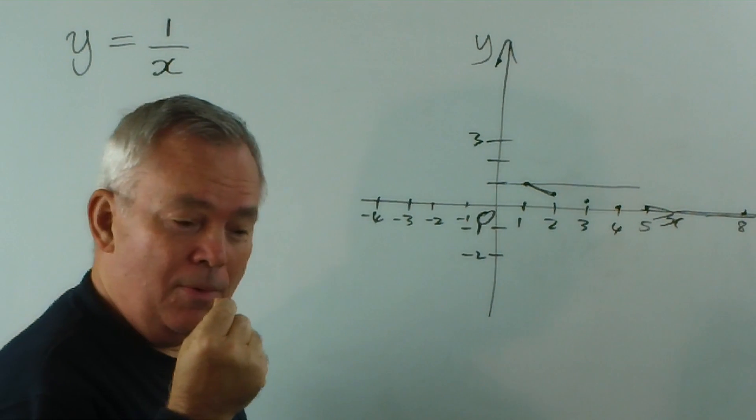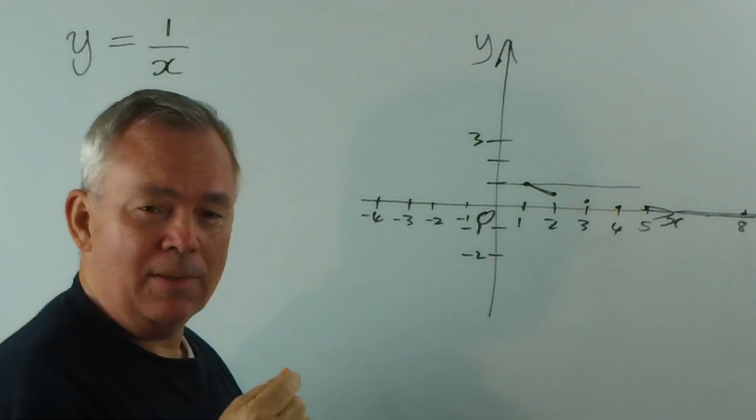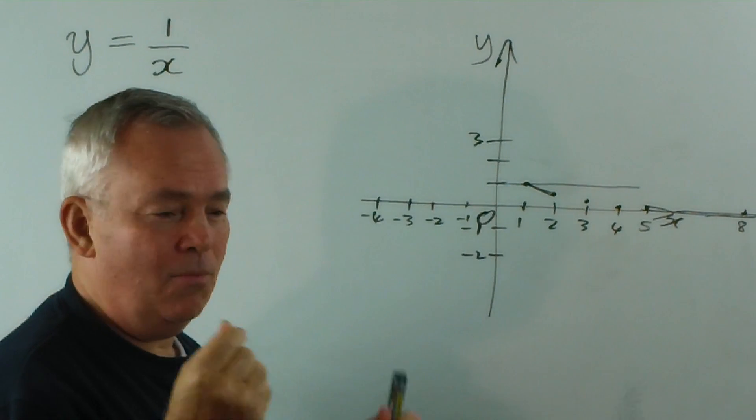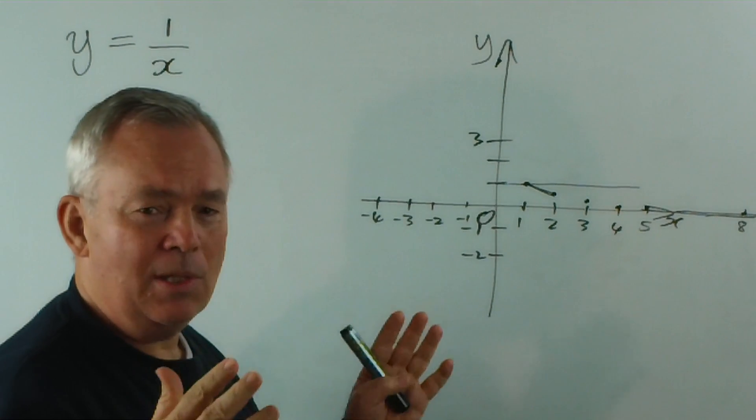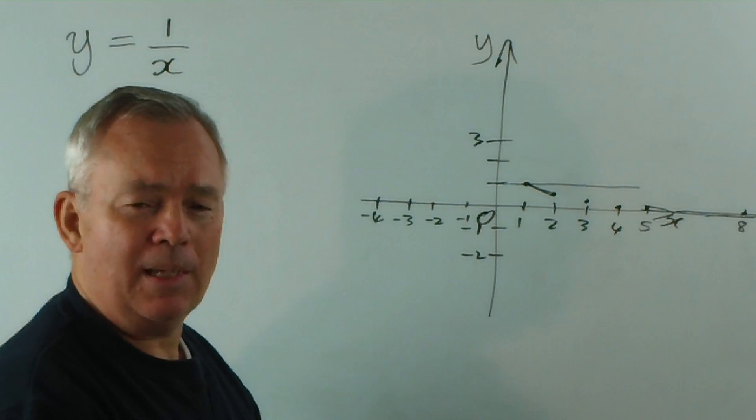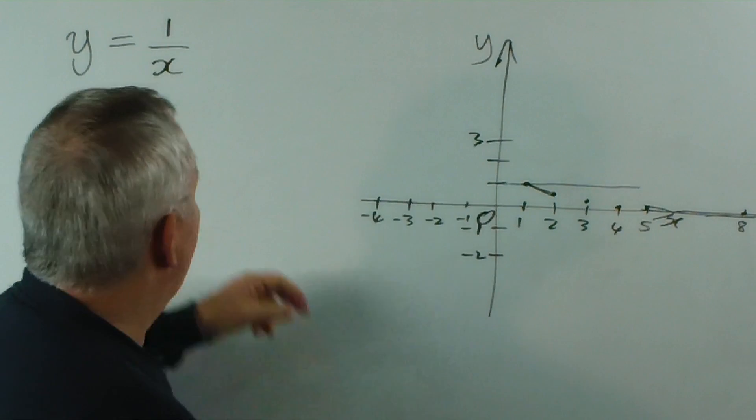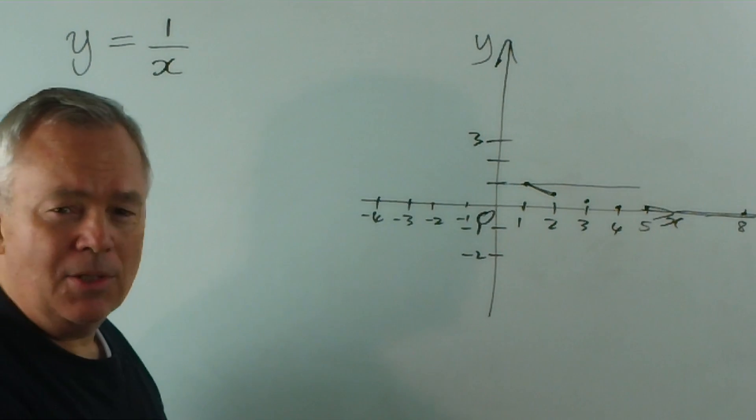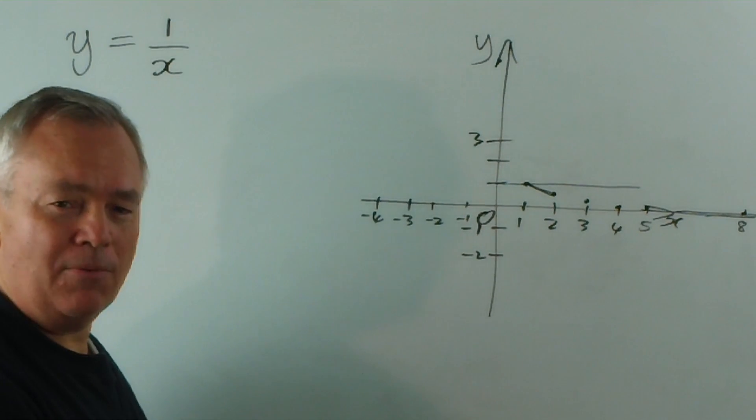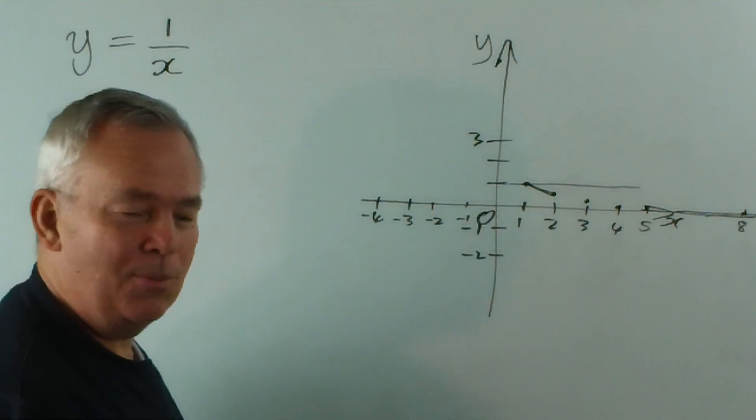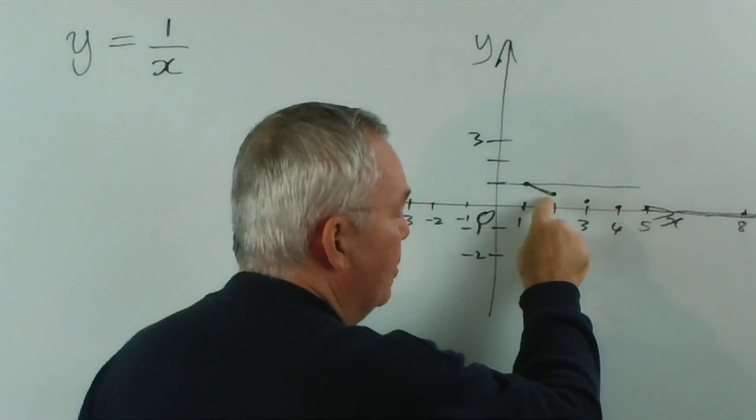For any finite number, you could have a number with 16 billion digits in it. One over a 16 billion digit number is still a positive fraction. Now, it's incredibly small, but it's still positive. So the answer is no.